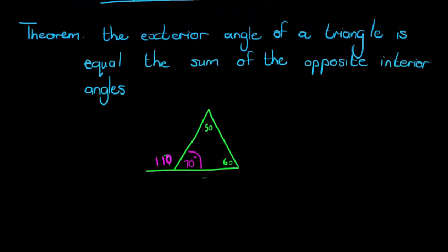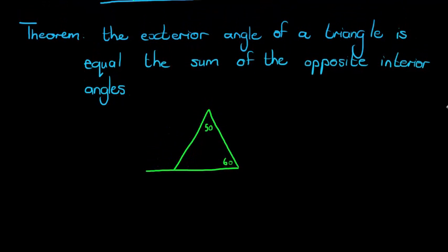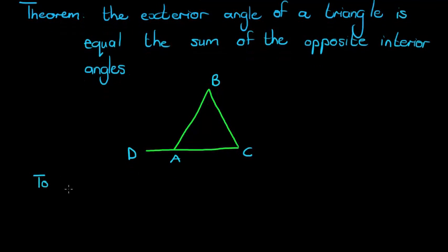And this would be exactly the same as proving. The proof is exactly the same. We follow that path, but instead of using values we just use the variables. So let's call this one A, B, C, and this extension we'll call D. So what will our to prove be? That DAB is equal to ABC plus ACB.